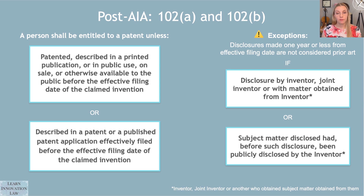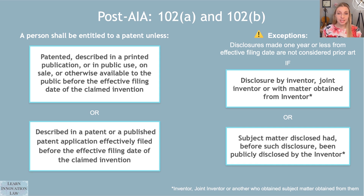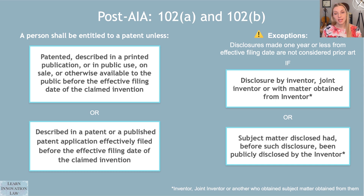Similarly, if the inventor had disclosed the information in a journal article and then somebody else ran out and tried to patent it, that's also not going to be prior art to the patent, because we assume that that person obtained the information from the patentee if the patentee had published that information first and within the grace period. So basically, in the post-AIA version of the statute, you have critically things that happen more than one year before the effective filing date, or things published by other people beyond the inventor — something documented like a patent, a printed publication, a manual, or in the case of a sale, a secret sale.